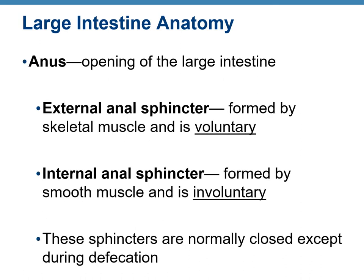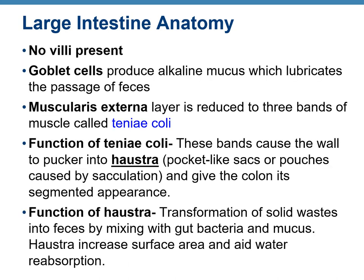The anus has two controlling mechanisms: the external anal sphincter, made up of skeletal muscle and therefore voluntary, and the internal anal sphincter, formed of smooth muscle and therefore involuntary. These sphincters are usually closed and open only during defecation. Continuing with large intestine anatomy: there are no villi present inside the large intestine.